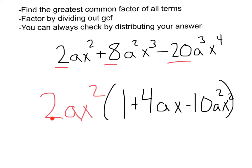Alright, let's check this. Well, I have 2ax squared times 1, that's 2ax squared. 2ax squared times 4ax, that's 8a squared, x cubed.